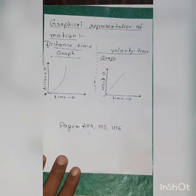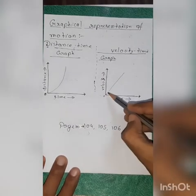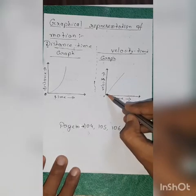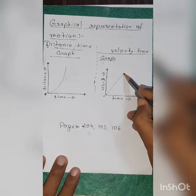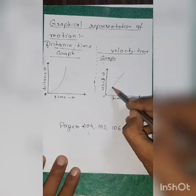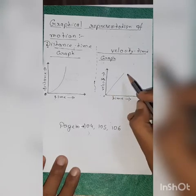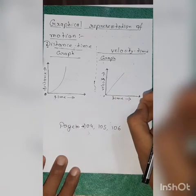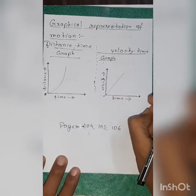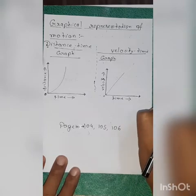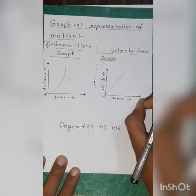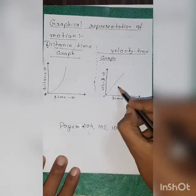Now, let us move on to the velocity-time graph. If the velocity-time graph is a straight line passing through the origin, it will represent an accelerated motion. That means in case of this graph, the final velocity is always greater than the initial velocity, meaning the value of acceleration A is positive.